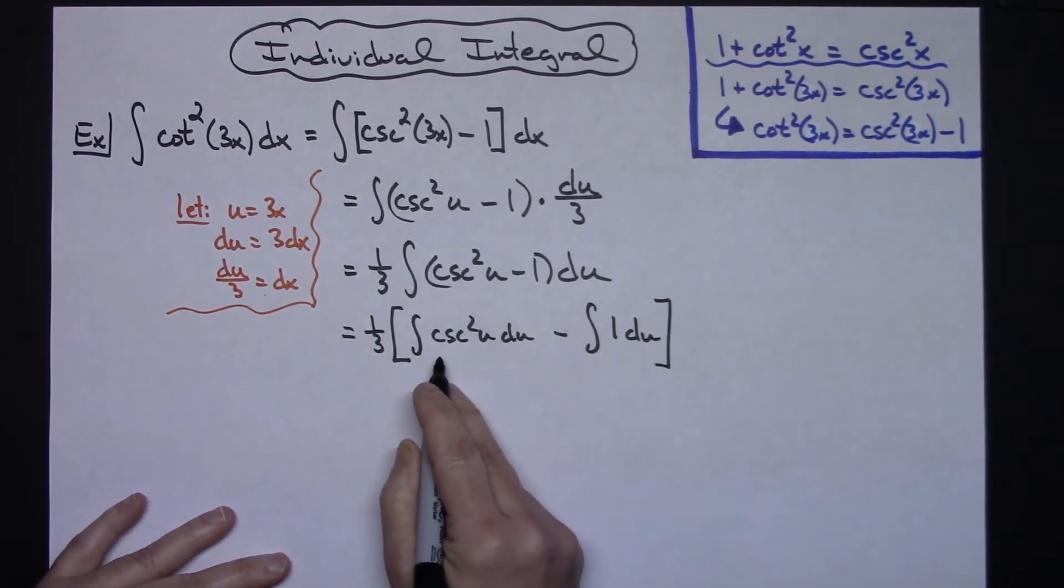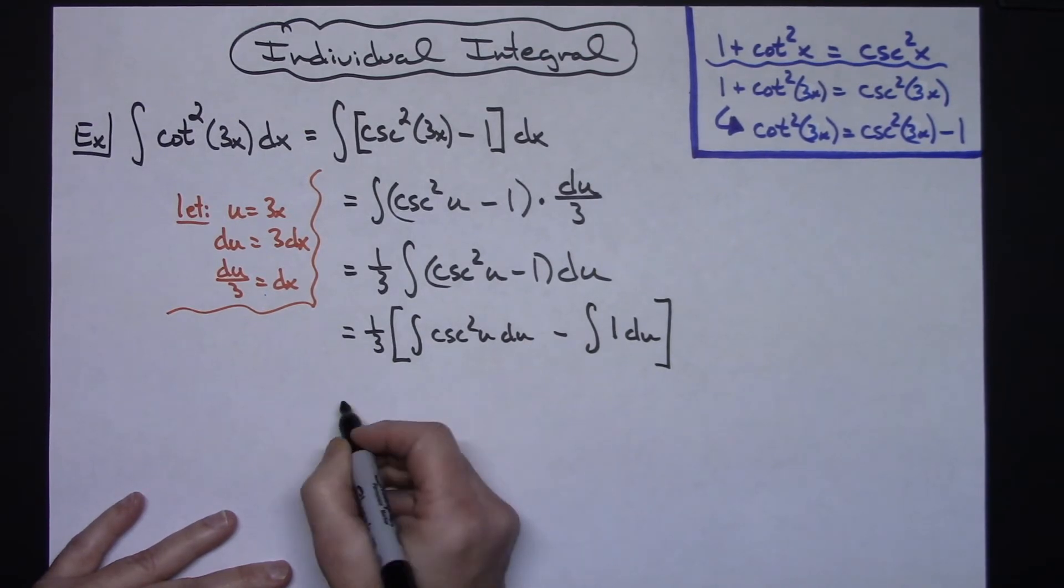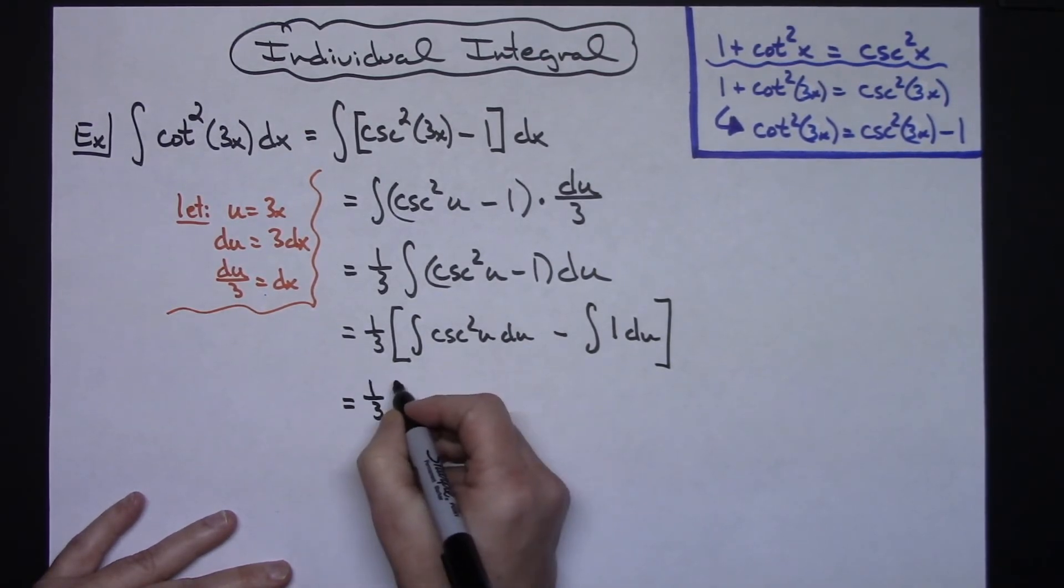Now this one you should have memorized. The integral of cosecant squared u is a negative cotangent u, so hopefully that is memorized at this point. So I can have the 1/3 out in front.